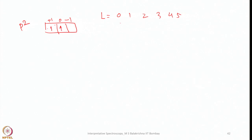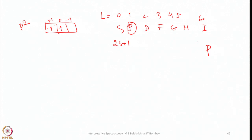Since L equals 1, we use the letter P. Now S equals 1/2 plus 1/2 equals 1, so 2S+1 equals 3 — giving a triplet. Since this is a less-than-half-filled subshell, J equals L minus S equals 1 minus 1 equals 0. Therefore, the ground term symbol for P2 is 3P0.